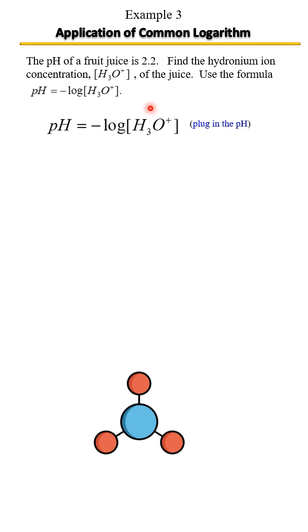We're going to solve for this H3O+. Let's plug in what we know. We know the pH is 2.2. Replace pH with 2.2.